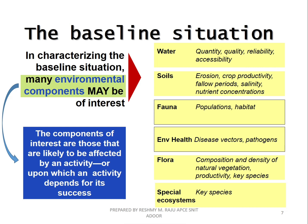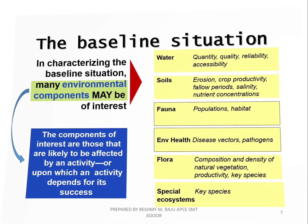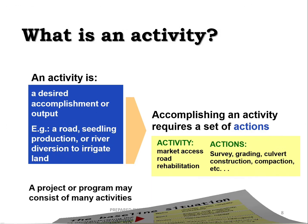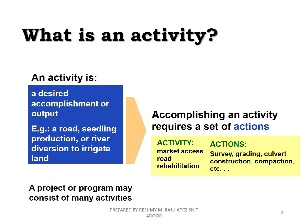When we establish the baseline situation, we need to know what the current environment is. If we are looking at different environmental components, we consider water quality, accessibility, soil, environmental health, flora, and so on. There is no special ecosystem excluded here. We establish the baseline situation and compare it to the projected situation.